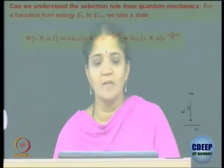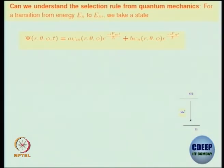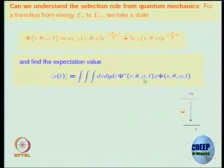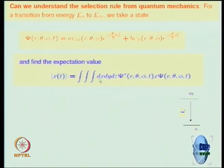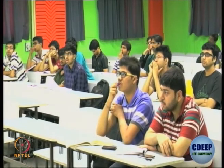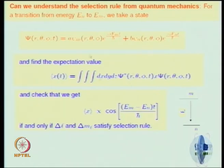Take this superposition state — calling the energy levels M and L — and find the expectation value of the position (radial coordinate) as a function of time. In one dimension you can take x. You write the volume integral in r, θ, φ coordinates, then compute the expectation value of the radial coordinate in your superposed wave function.